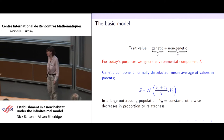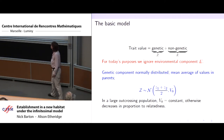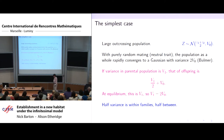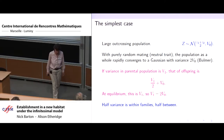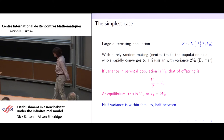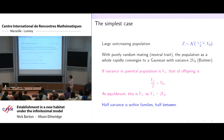Otherwise, as we'll see a little bit later on, the variance will decrease in proportion to the relatedness between those parents. The infinitesimal model is not something on which people can really agree a definition, and therefore they can't really agree its origin. I'm going to pick my favorite historical figure and attribute it to Fisher — I think it's fair to say it is in Fisher, though it's not terribly easy to find.